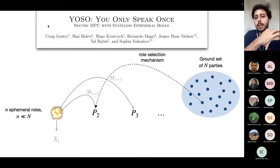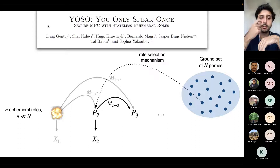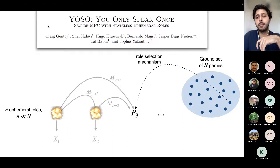For the second step, the role selection mechanism takes some other party to execute role number two. Again, you broadcast a public value and send some private messages to future roles and so on. You can go offline. The role selection mechanism then chooses someone to execute role number three, and there's some public value, and again this machine can go offline.